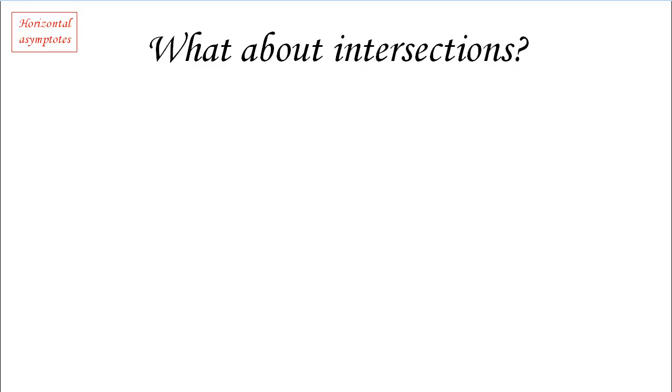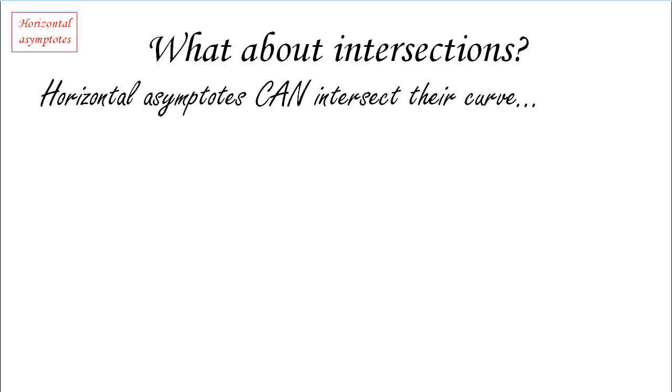What about intersections? I promised you that we'll go back to this issue, this idea that seems to always come together with asymptotes but it's not really part of the concept of an asymptote. Well, horizontal asymptotes just like vertical asymptotes can intersect their curve.